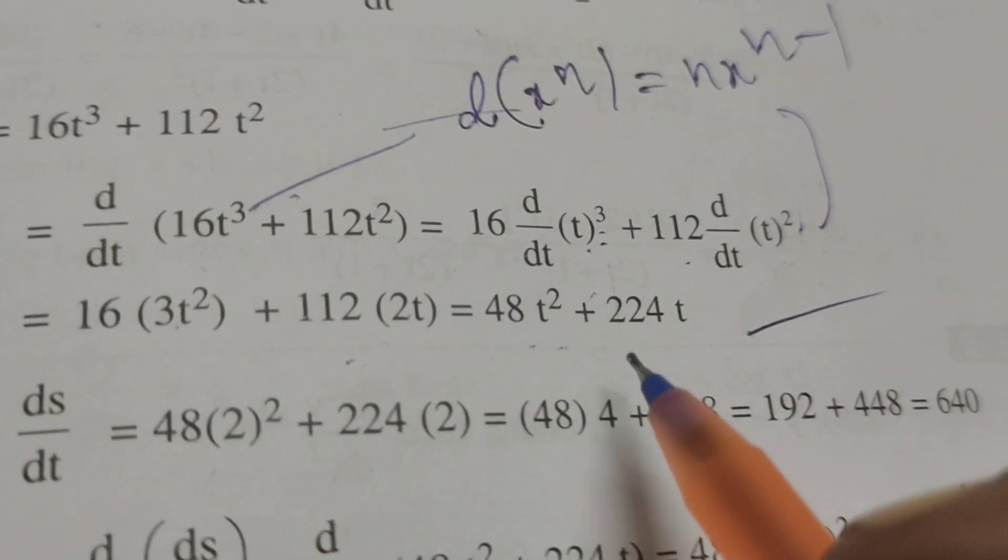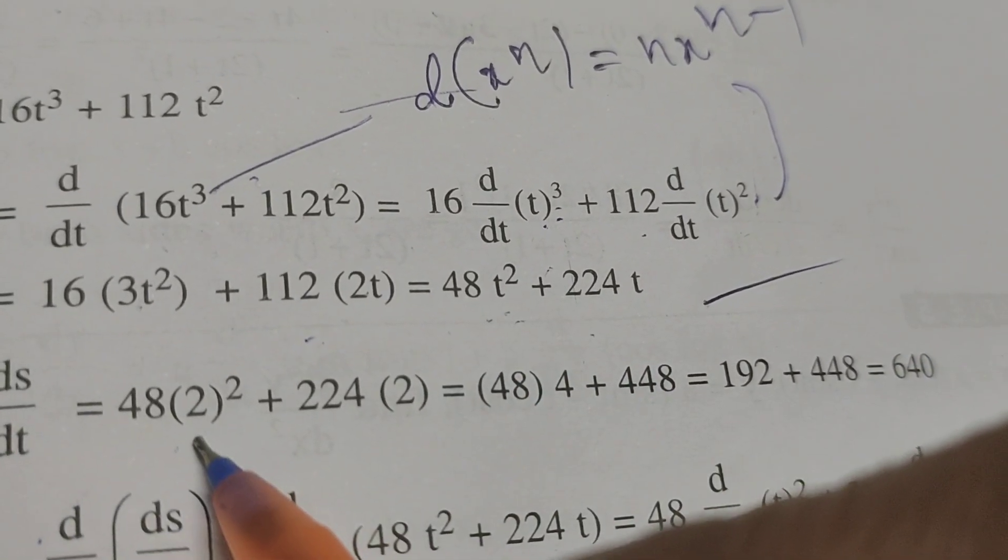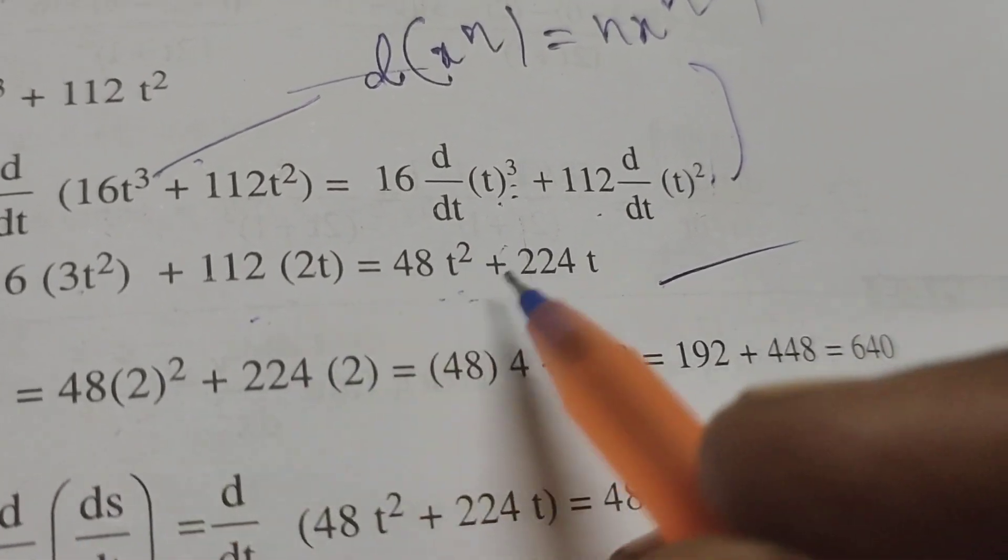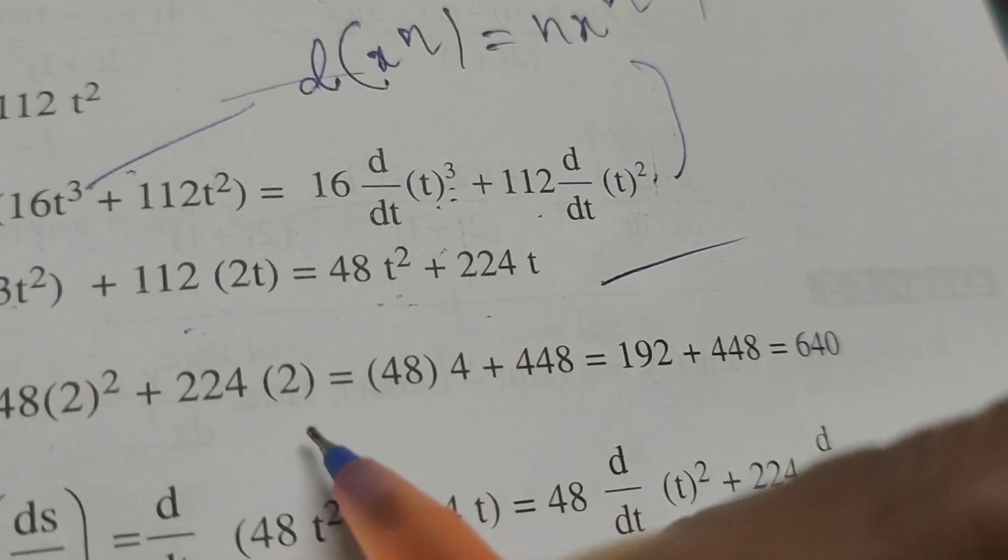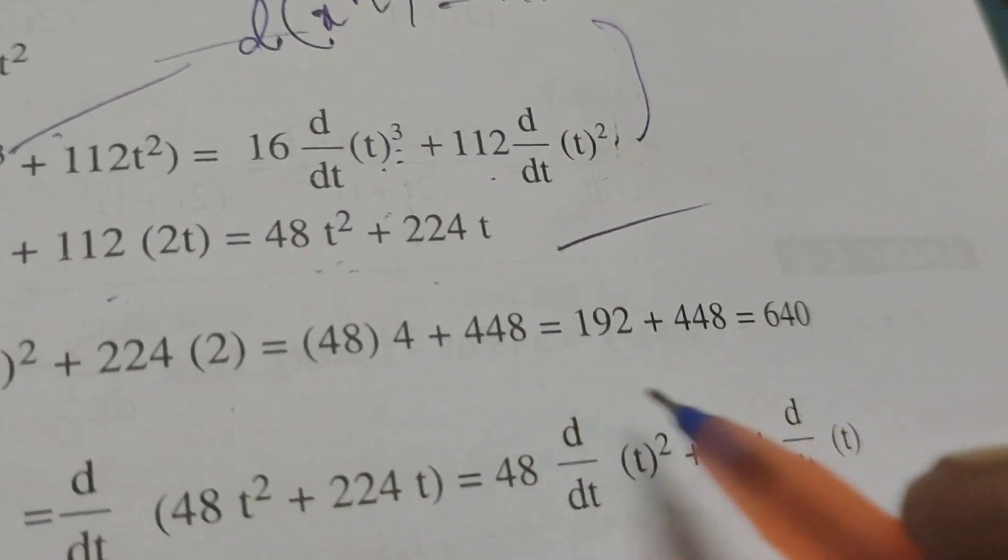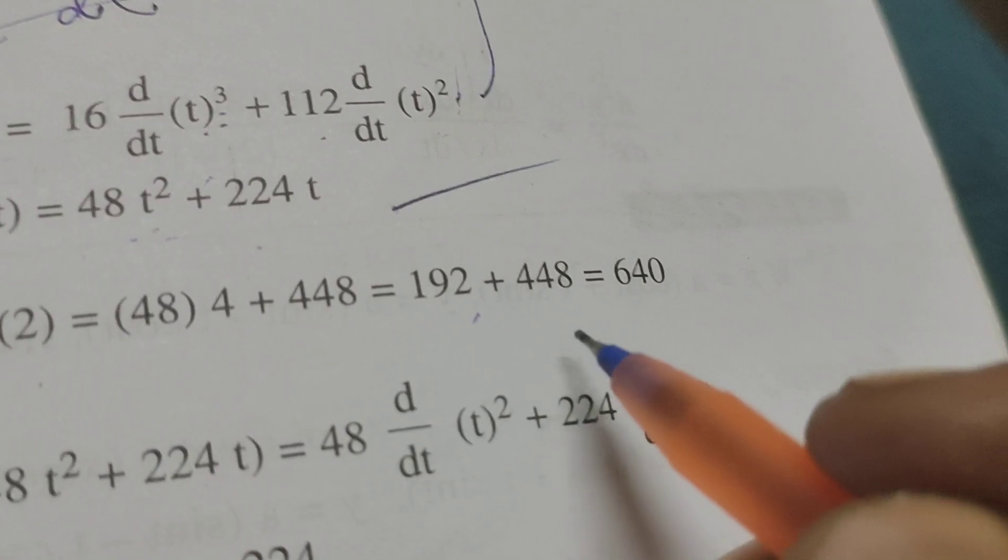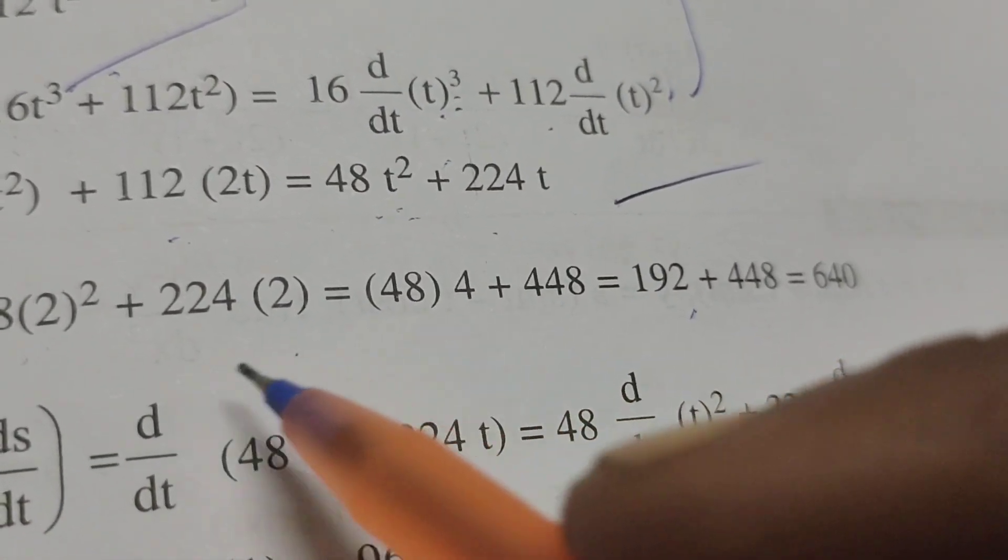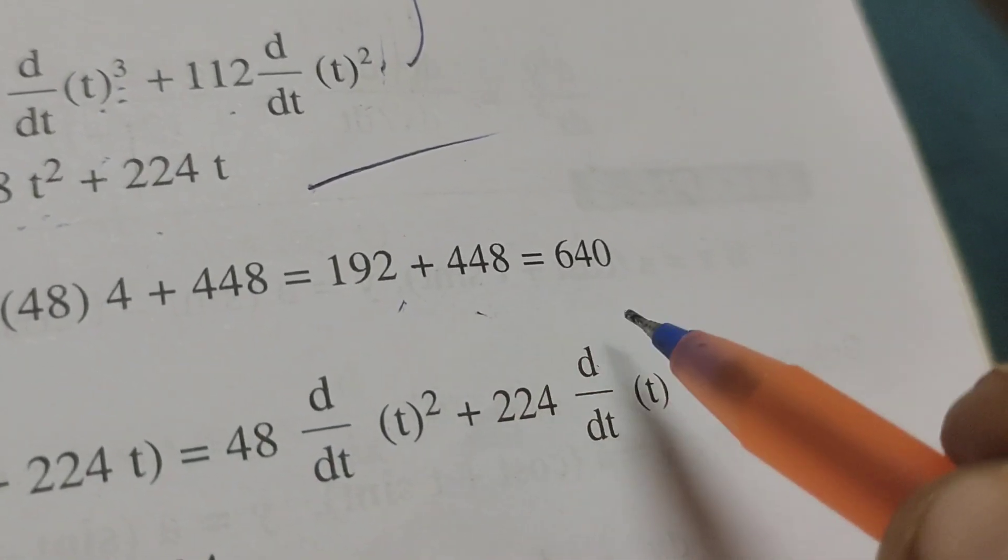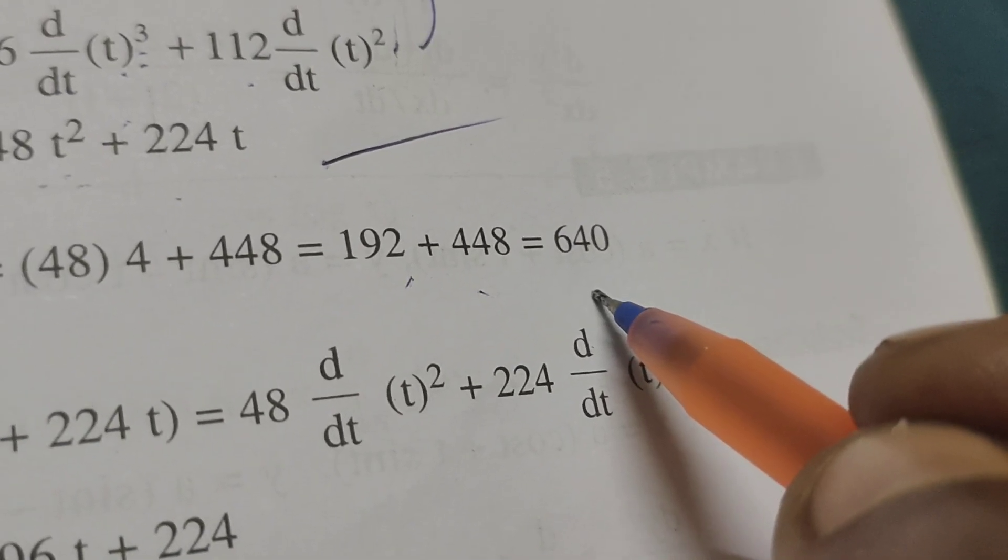ds/dt becomes, substituting t equals 2: 48 times 2² plus 224 times 2, which equals 48 times 4, that's 192, plus 448, giving us 640.